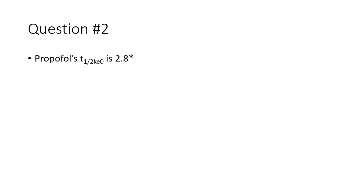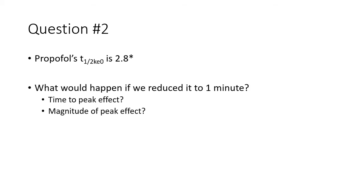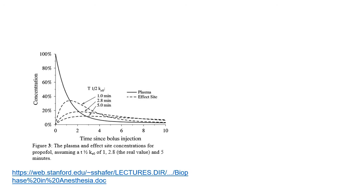Let's say we were to reduce propofol's T half KE0 from 2.8 minutes to 1 minute. What effect would this have on the time to peak effect? And what effect would this have on the magnitude of the peak effect for a given dose? The answer is in this graph on the left of screen. We can see that if we decrease the T half KE0, that is, we make the drug equilibrate more quickly, we can see that the peak effect occurs earlier, and therefore the effect site curve will intersect the plasma curve, the thick line, at a higher concentration. Therefore, the effect of reducing the T half KE0 is to decrease the time to peak effect, and also to increase the magnitude of peak effect for a given dose.